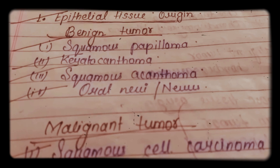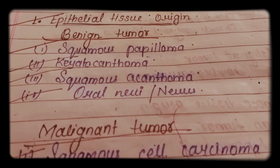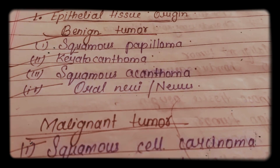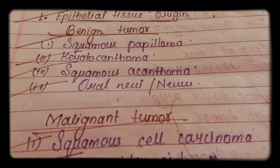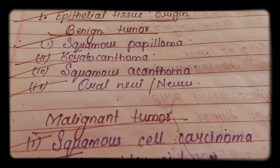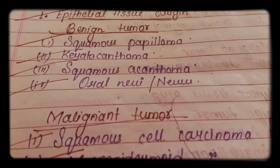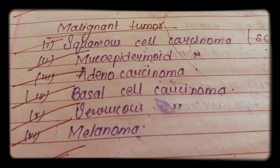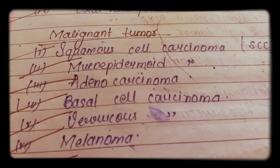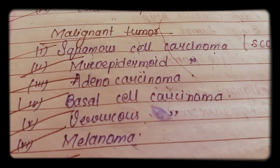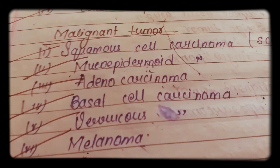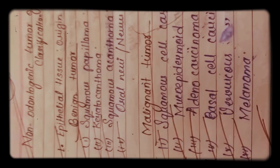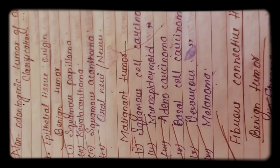Epithelial tissue origin includes benign and malignant tumors. Benign tumors include squamous papilloma, keratoacanthoma, squamous acanthoma, and oral nevi. Malignant tumors include squamous cell carcinoma, mucoepidermoid carcinoma, adenocarcinoma, basal cell carcinoma, verrucous carcinoma, and melanoma.